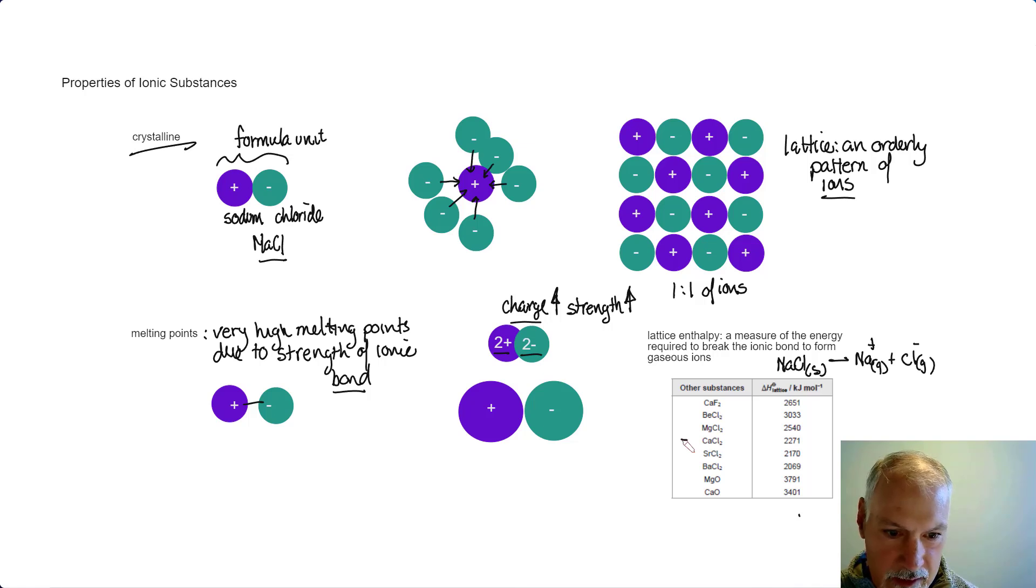Let's consider calcium with chlorine and calcium with oxygen. Calcium has a 2+ charge, and oxygen has a 2- charge. Here, calcium is with chlorine - a 2+ and 1- situation. The charge isn't as big in this situation, and we can see a reduction in the lattice enthalpy as expected.